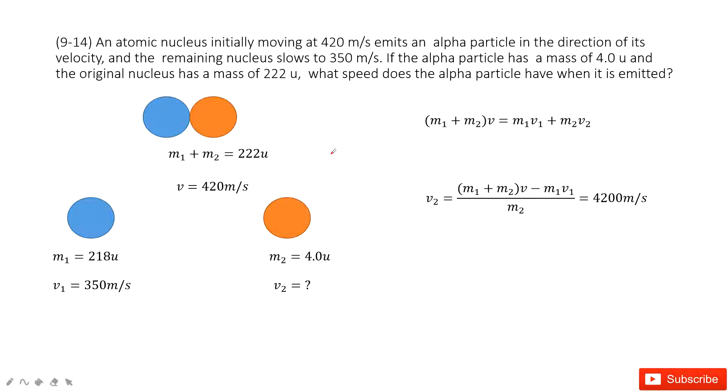We can see initially we have the atomic nucleus. And the total mass is given, 222u. And the velocity is given.